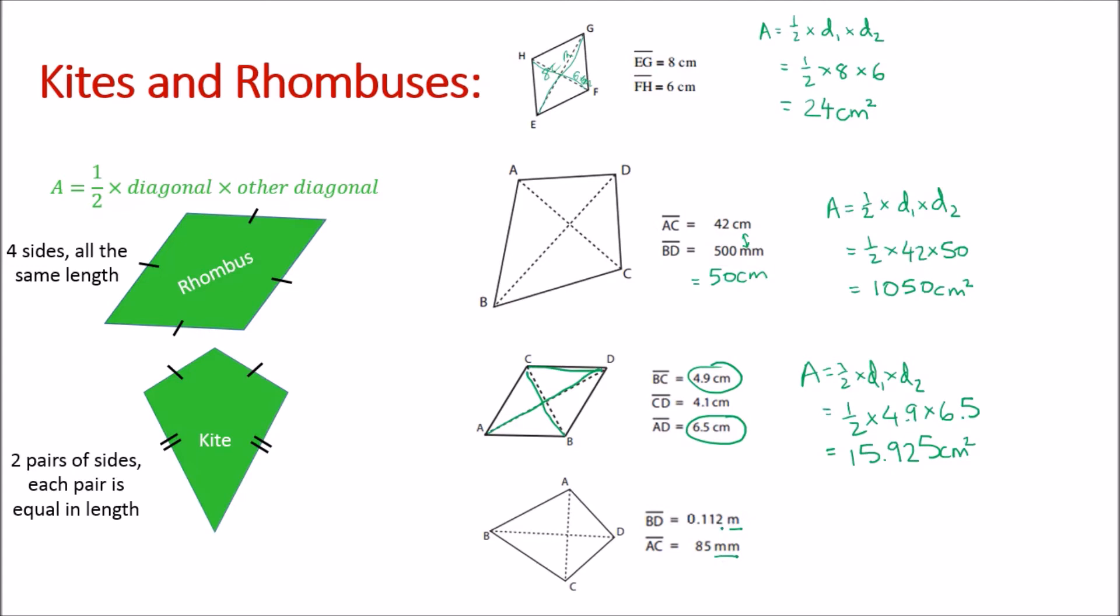How many centimeters are there? So if we're going to get 0.112 meters, we'll go hop hop and we've got 11.2 centimeters. 85 millimeters is the same as 8.5 centimeters.